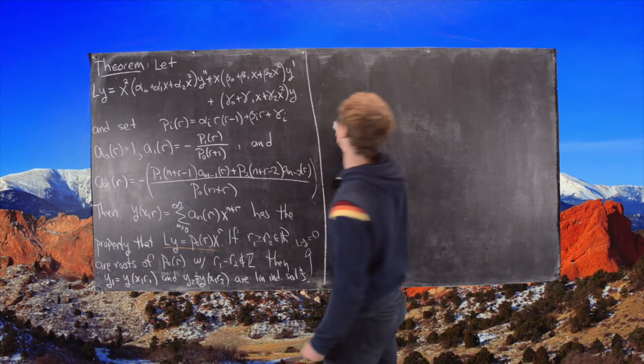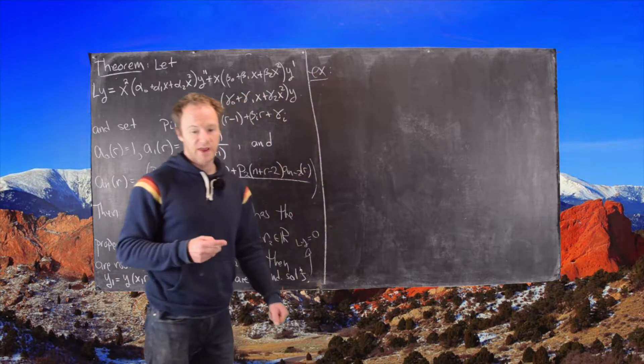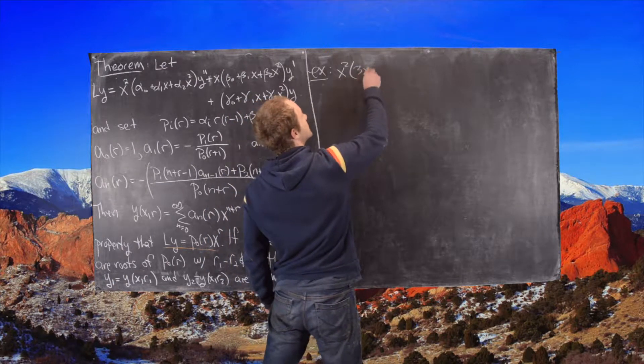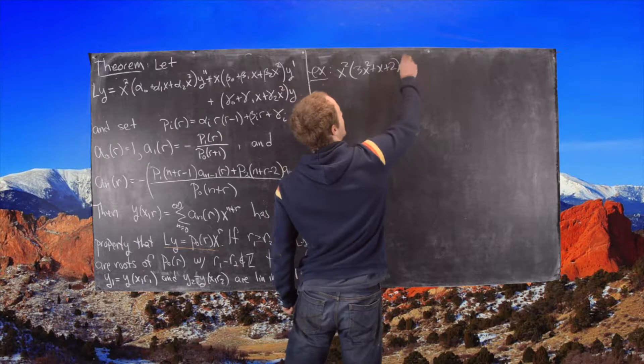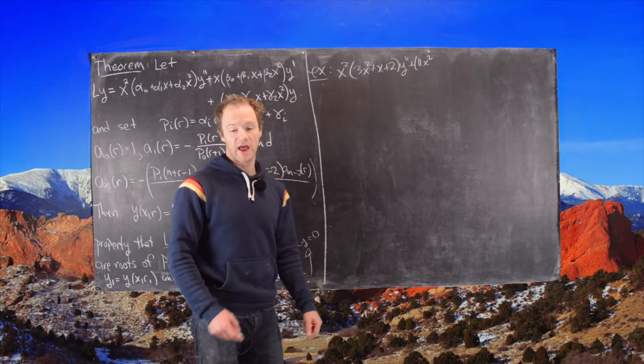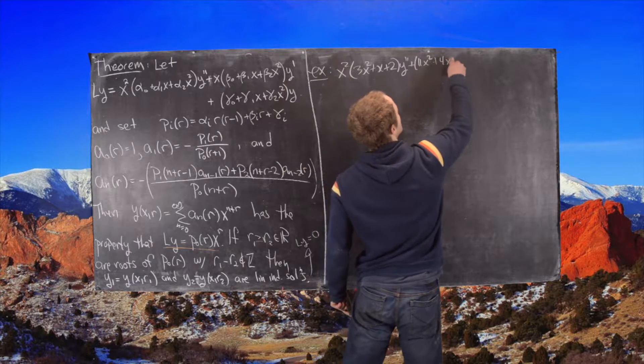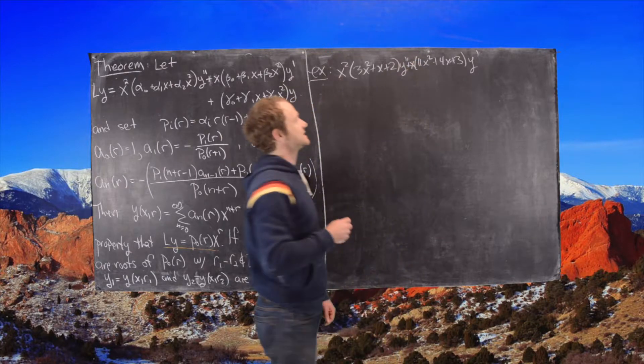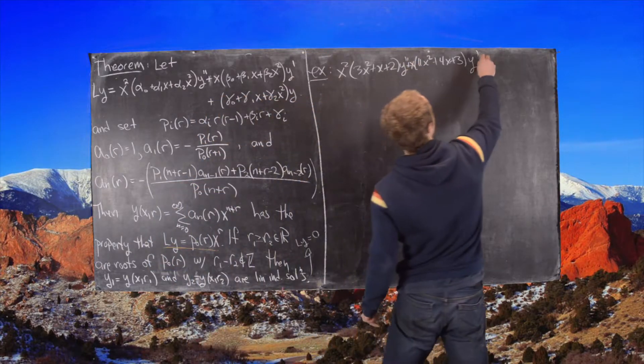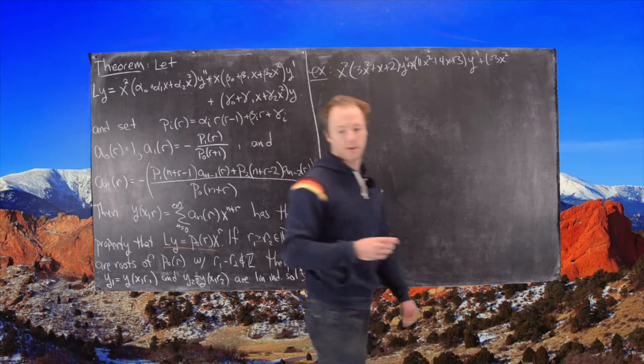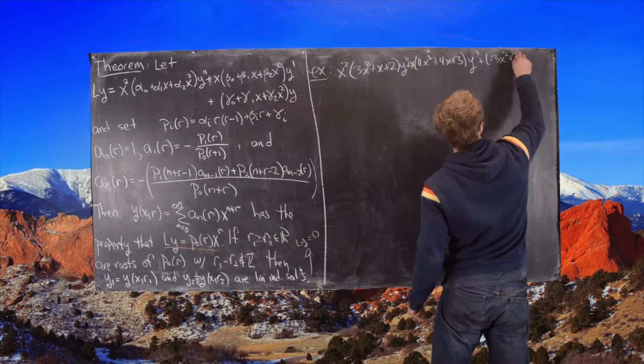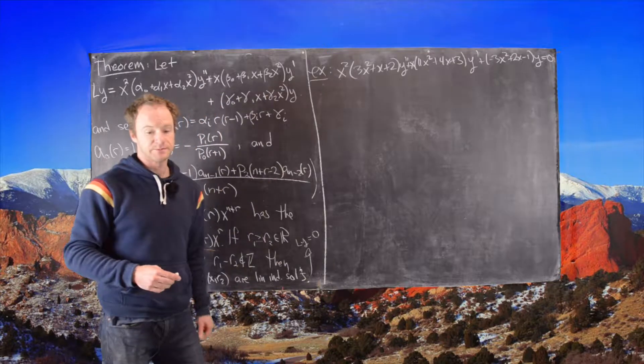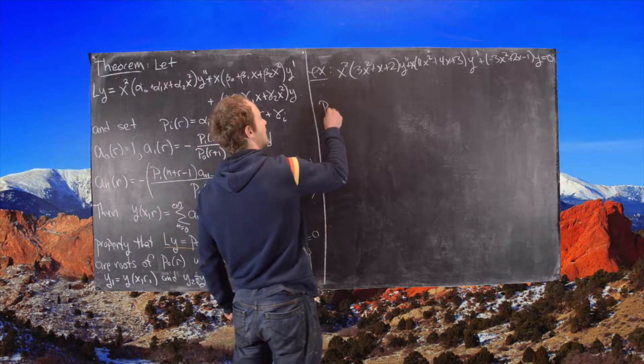So here's the following example I want to look at for this video. So we have x squared times (3x squared plus x plus 2)y double prime and then plus (11x squared plus 4x plus 3)y prime. And that should all be multiplying x. So let's sneak that in there. Finally, we have plus (-3x squared plus 2x minus 1) times y equals 0. So this is the differential equation that we want to solve.